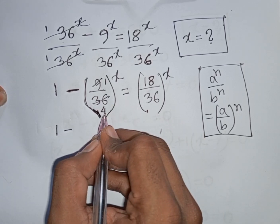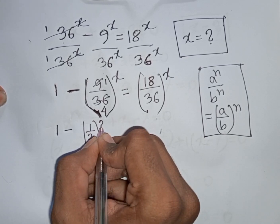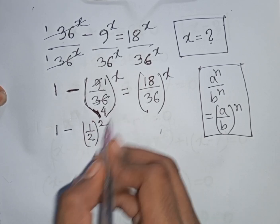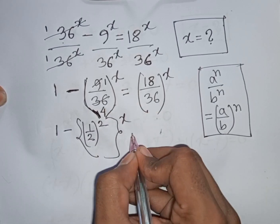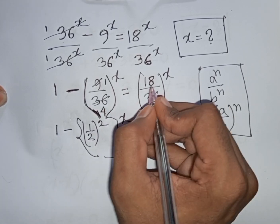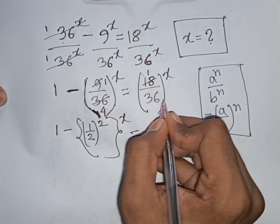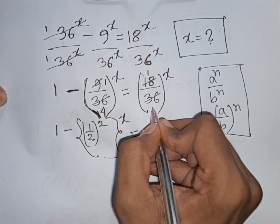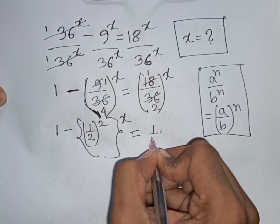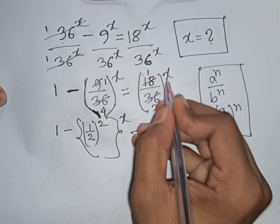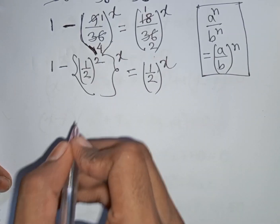Now, 1/4 is the same as (1/2)^2, so the left side becomes ((1/2)^2)^x. The right side is 18/36 simplified to 1/2, giving (1/2)^x.